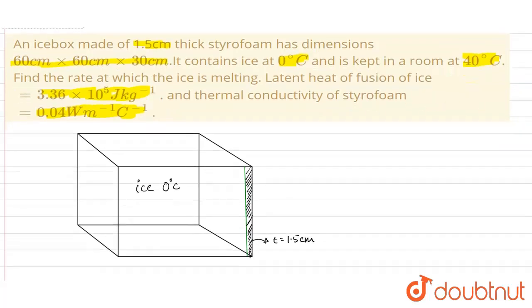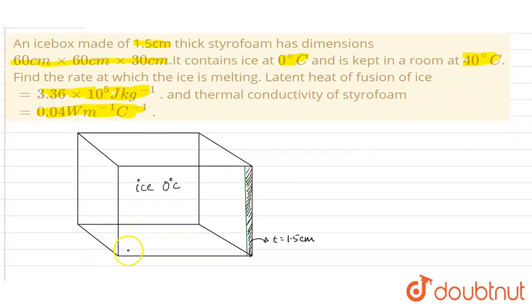The dimension of this ice box is given to us as 60 by 60 by 30. So the length is 60 centimeters, the height is given to us is 30 centimeters, and this width is 60 centimeters. These are the dimensions of the ice box.